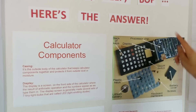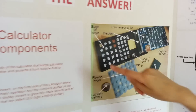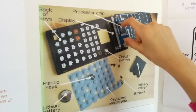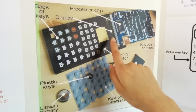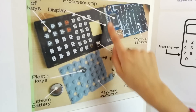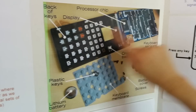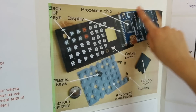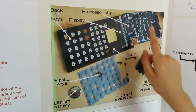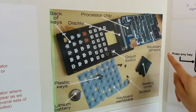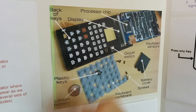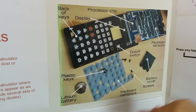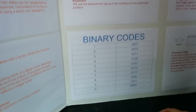So here's the inside of a calculator. There's a processor chip, the display — that's the screen — the back of the keys, and these are the keyboard sensors that sense if you press the key or not, the on-off switch, and many other things.